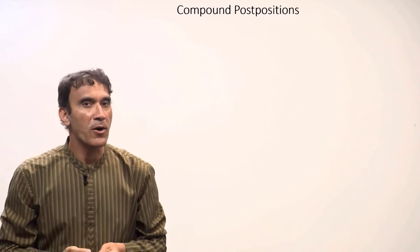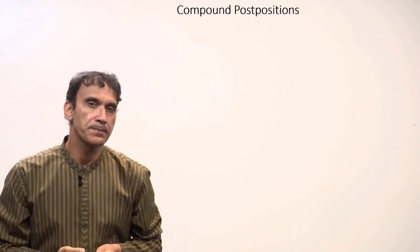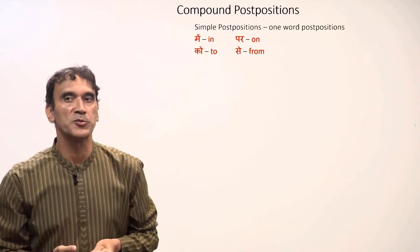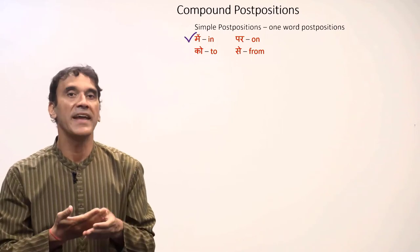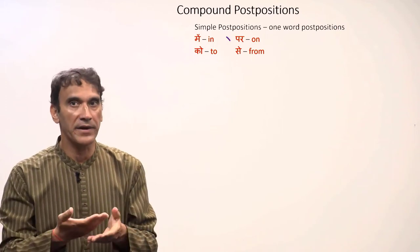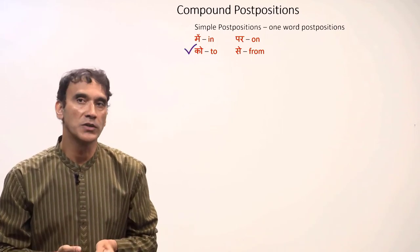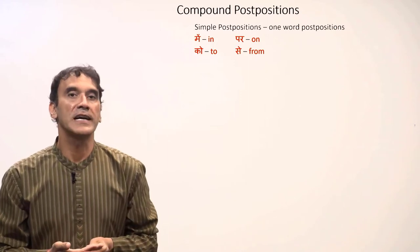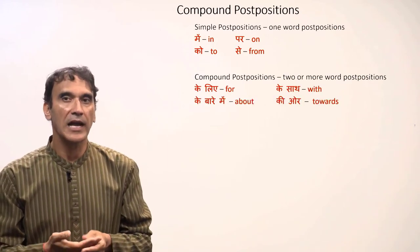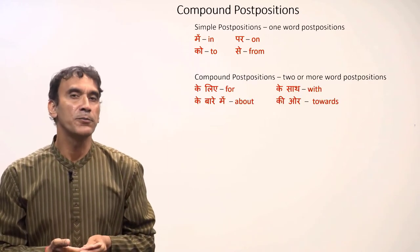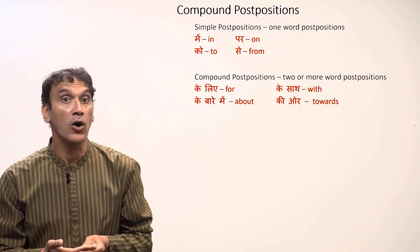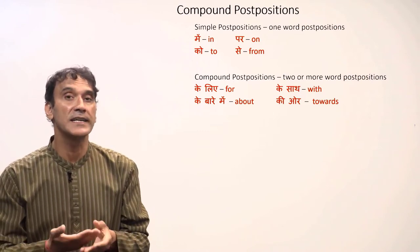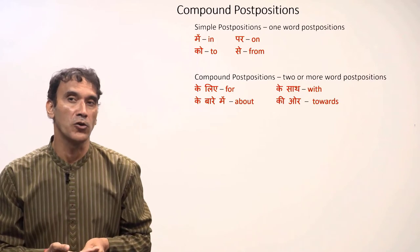The next grammar point is compound postpositions. In earlier grammar points, we learned the simple postpositions — may, in, per, on, co, to, say, from. Today we will learn compound postpositions. Apart from a few postpositions we learned earlier, all other postpositions are compound. That means they consist of two or more words.